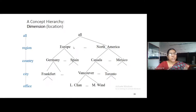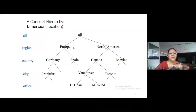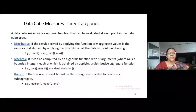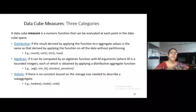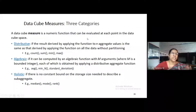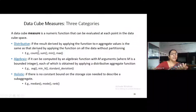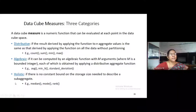In the fact table we are using measures. Measure is a numeric function that can be evaluated at any point in the data cube space. There are three types of measures: distributive, algebraic, and holistic.